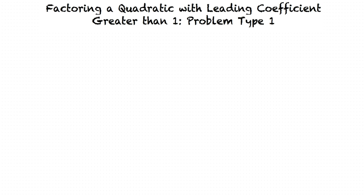This video will cover the topic: Factoring a Quadratic with Leading Coefficient Greater Than 1, Problem Type 1. Problem Type 1 covers quadratics whose leading coefficients are greater than 1 and are prime numbers, meaning that they only have two factors, namely 1 and the number itself.